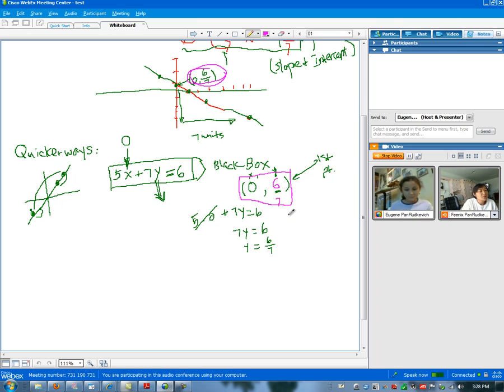So how many points do I need? You need two to make a line. That's right. So I'm going to go back to my box again. Five x plus seven y equal to six. Right? Yeah. I just need one more point.